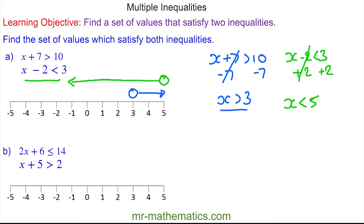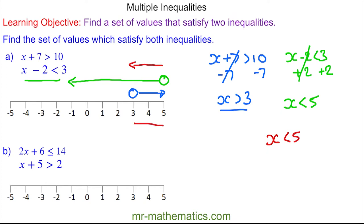You can see here we have values of x which are true for both inequalities, and we're going to write this as our solution. From the green inequality, x is less than 5, but x is also greater than 3. So x is greater than 3 and less than 5 — this is the solution to these multiple inequalities.